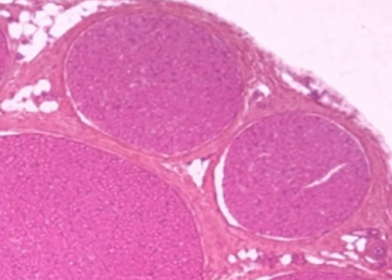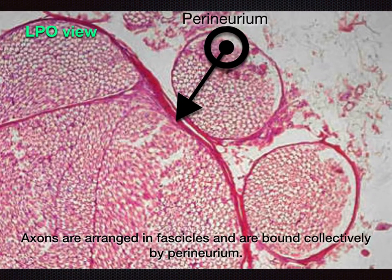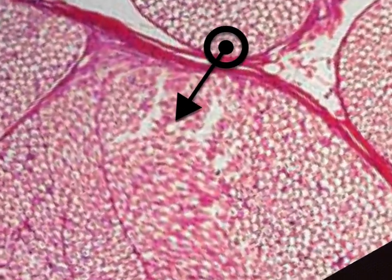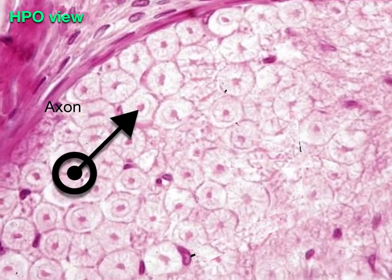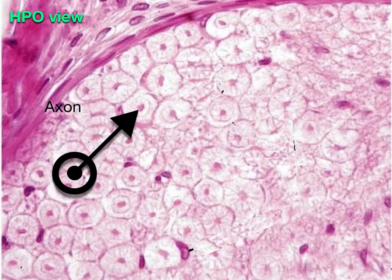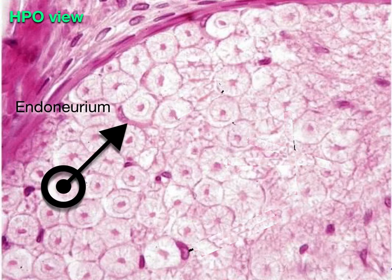Let us shift to LPO. At LPO, we can see that axons are arranged in fascicles and are bound collectively by perineurium. Let us shift to HPO. At HPO, we can see the dark staining structure shown by the arrow — this is the individual axon. The pale surrounding area is the myelin sheath covering individual axons. Each axon is then ensheathed in a layer of endoneurium.